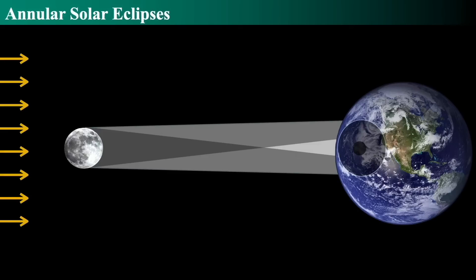The other type is an annular eclipse. Annular eclipses do not mean they happen every year annually — it means that it forms an annulus, which is a round ring. Annular eclipses are a special form of partial eclipse where the moon is too far away to fully cover the sun. That's because the moon's orbit is elliptical, so sometimes it's farther and sometimes it's nearer. The moon has to be at its closest point in its orbit for a total solar eclipse; if it's at its farthest point, it will be an annular eclipse.